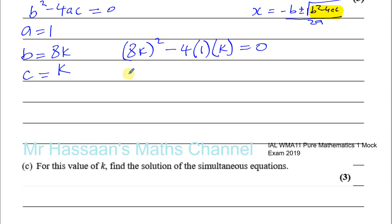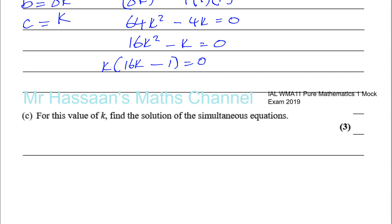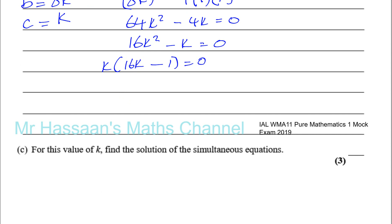8 squared is 64, so we have 64k squared minus 4k equals 0. Dividing by 4 gives 16k squared minus k equals 0. Taking out the common factor of k: k times 16k minus 1 equals 0. So we have two possible solutions: either k equals 0 or 16k equals 1, giving k equals 1 over 16.